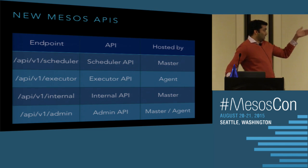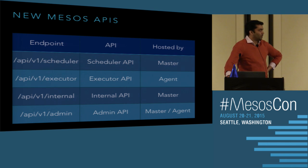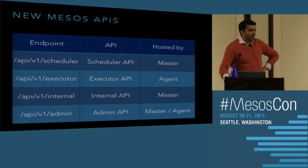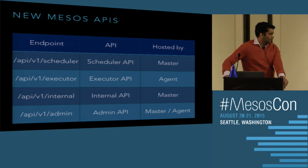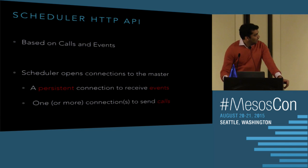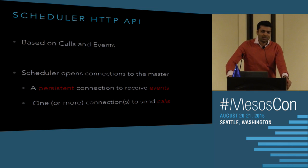There are four new Mesos APIs hosted by different components. The master hosts a new endpoint called API v1 scheduler. The agent hosts a new executor API that executors use to talk to it. Both master and agent export the admin API for statistics and state. Master and agent also communicate through an internal API using HTTP. For the rest of this talk, I'll focus mainly on the scheduler HTTP API, which is the most fleshed out and coming up soon.